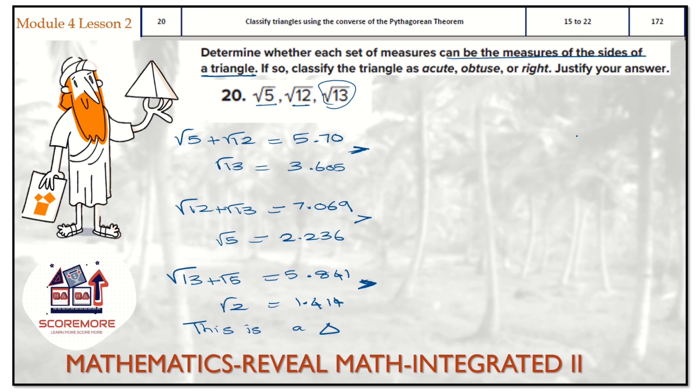Now second part of the question is, we are going to classify whether this is acute, obtuse or right angle triangle. For that, we need to choose hypotenuse. So always focus on the larger number. Here, the larger number is root 13. So let's keep c as root 13. Substitute in the formula. Root 13 squared is 13. And a squared plus b squared is root 5 squared plus root 12 squared, which is 17.